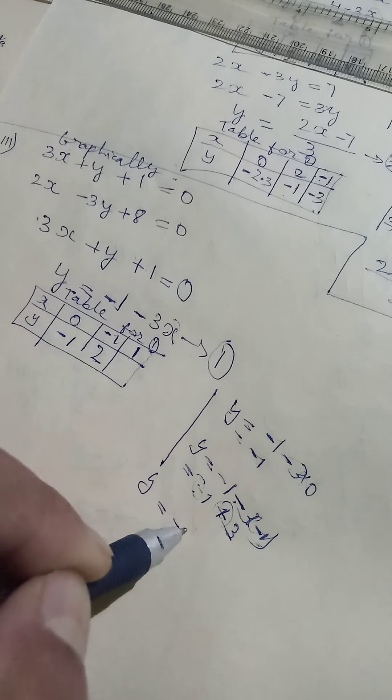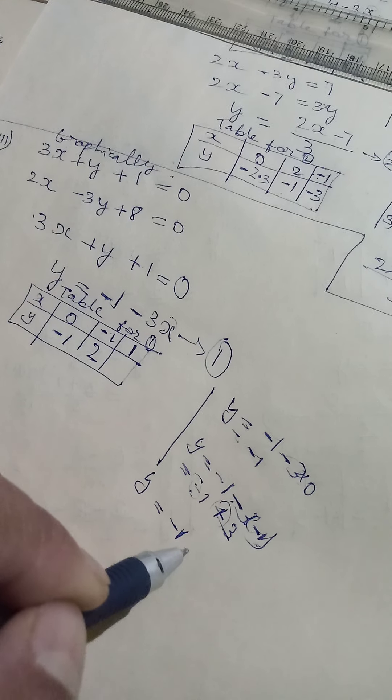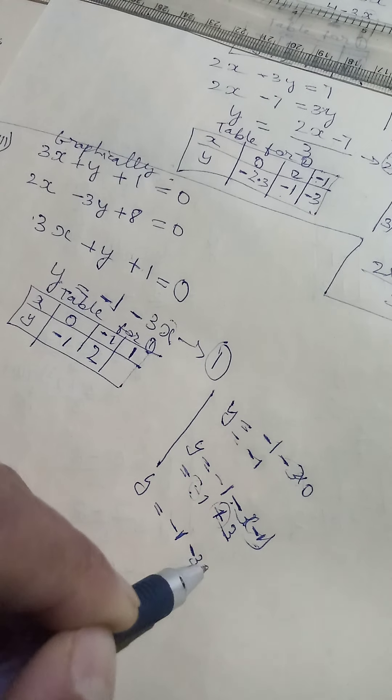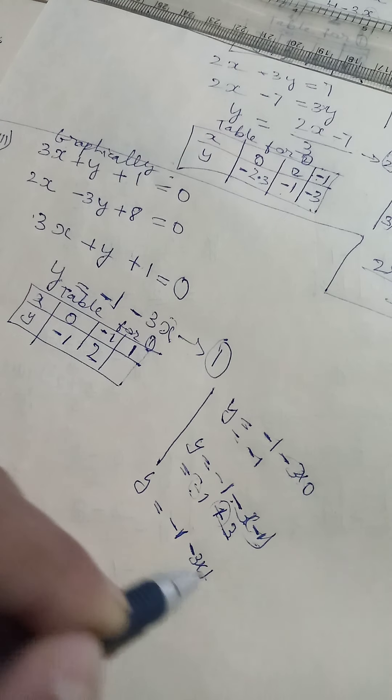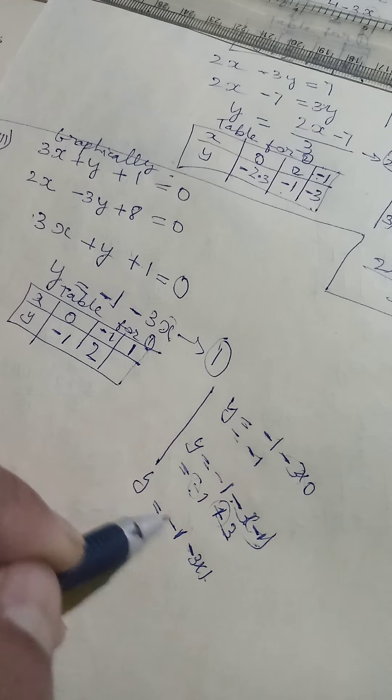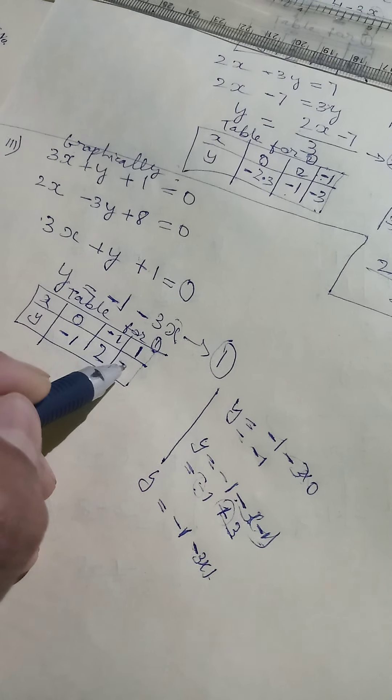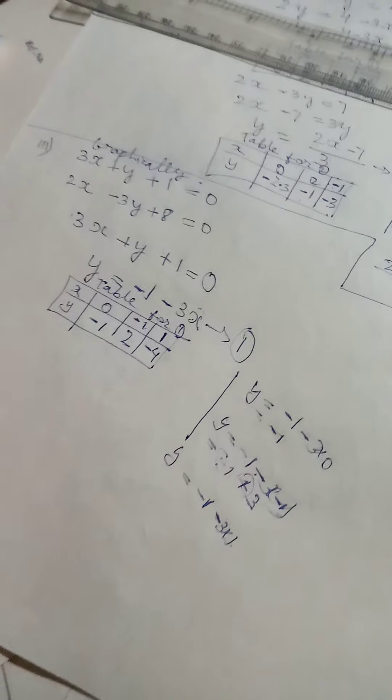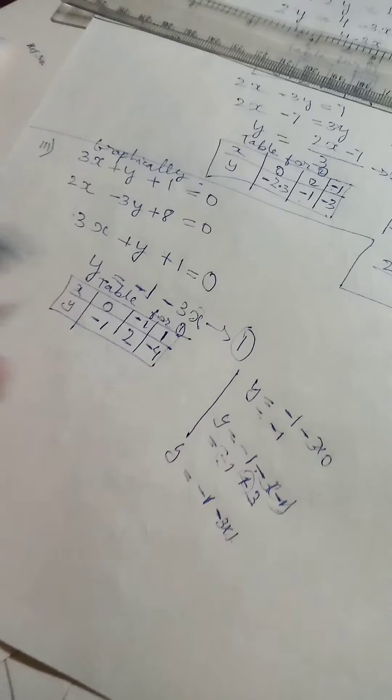Then again, in place of X, you replace with 1. It depends on our choice. 3 into 1, 3. Both are minus. What to do? We plus, but sign remains the same. So we complete for the first one.